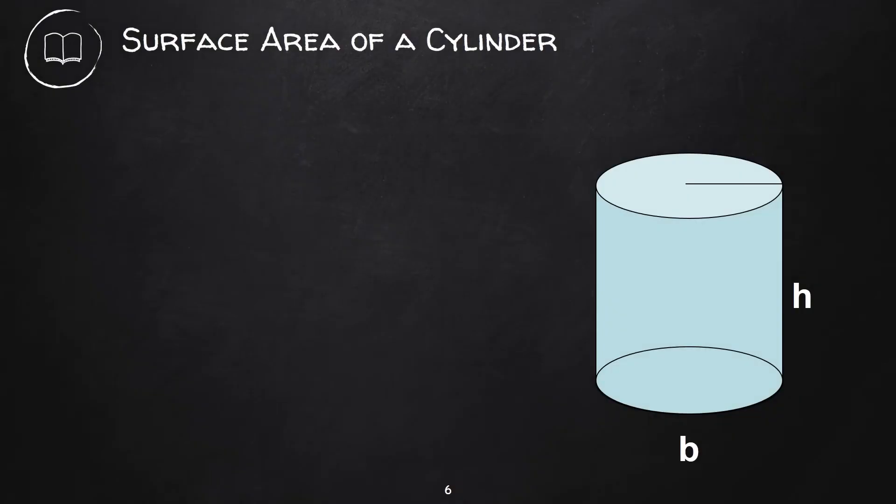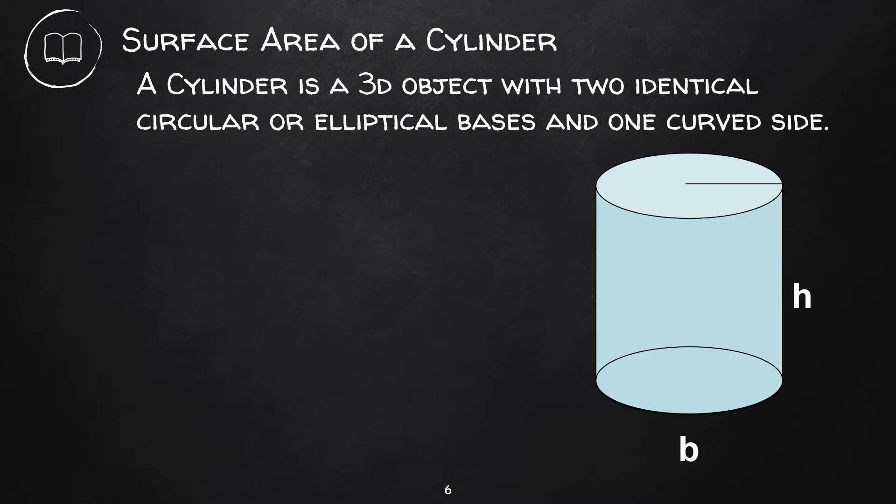Next, we have a cylinder. A cylinder is a 3D object with two identical circular or elliptical bases and one curved side.